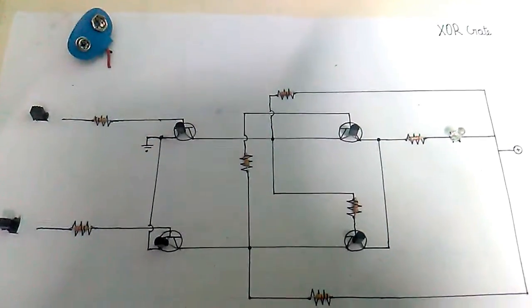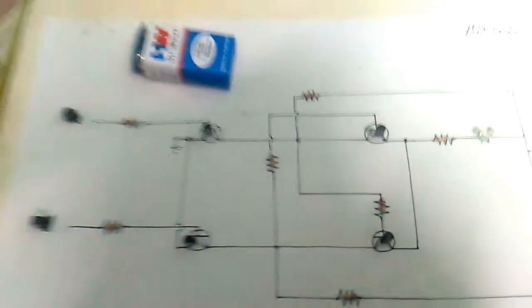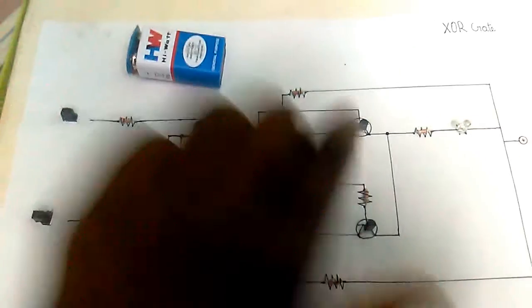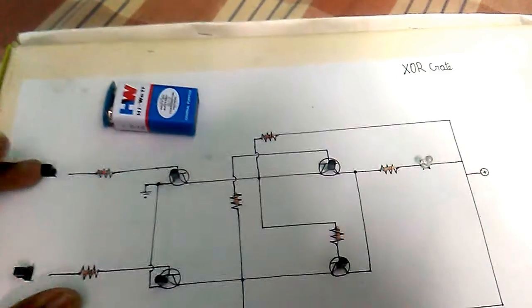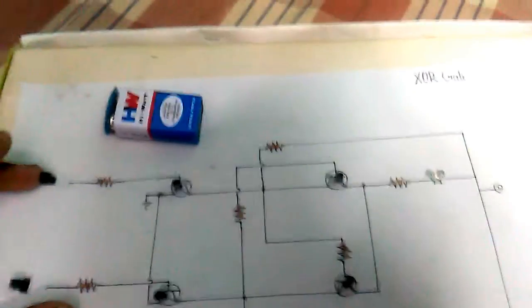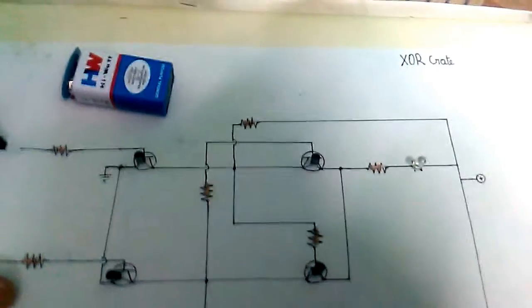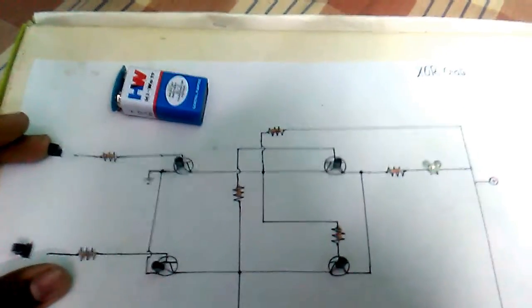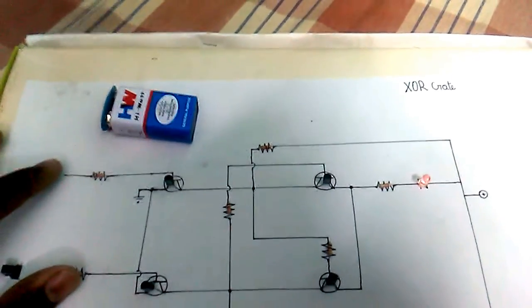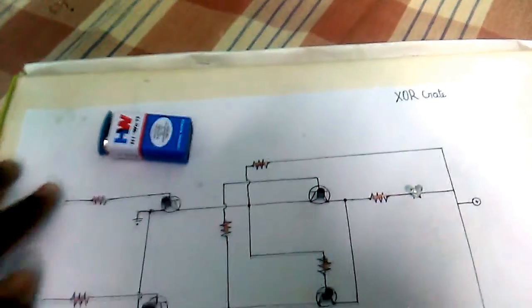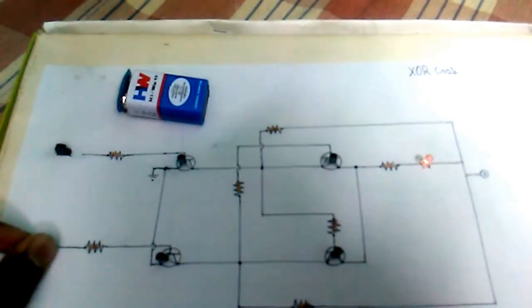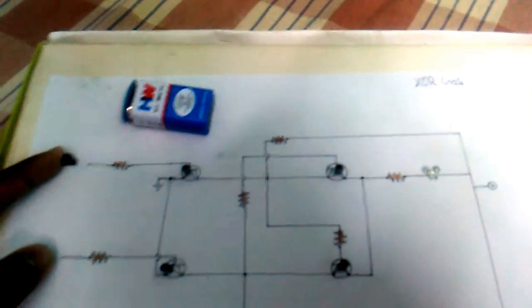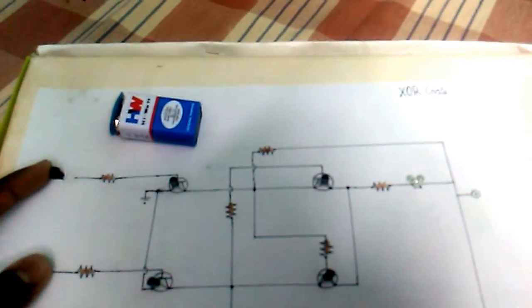Let us see this in experiment. This is the XOR gate circuit diagram and both switches are in zero position. Now I am going to move one switch to one position. Let's see whether the LED glows or not. It glows, of course. Okay, let us see in this position. Now they glow. If we keep them both in on position, they should not glow. Let's see. Yes, it works.